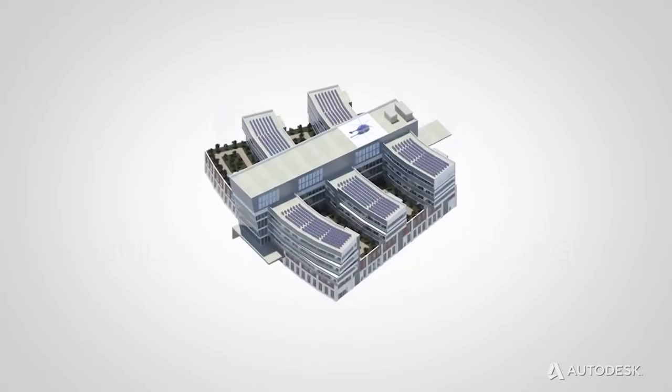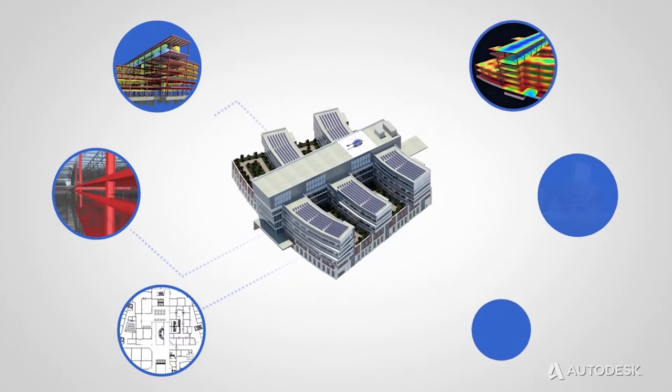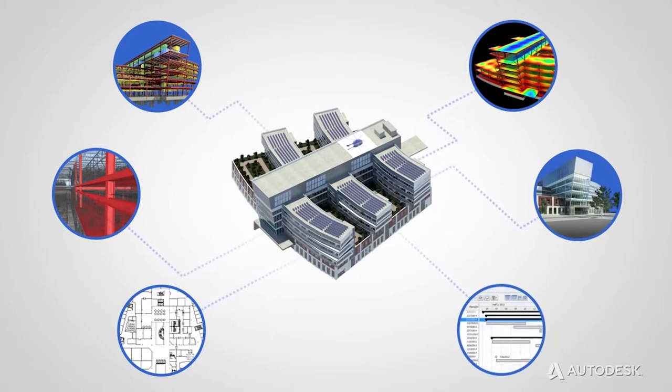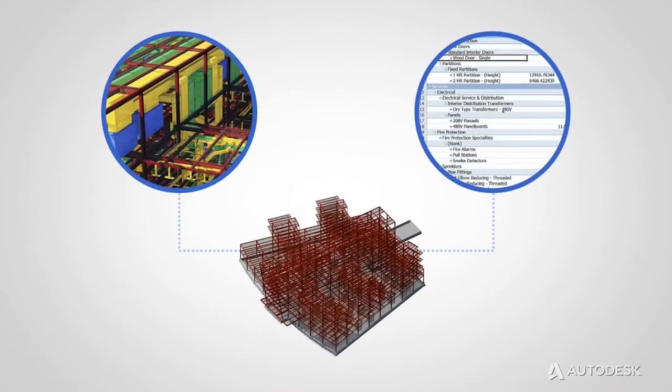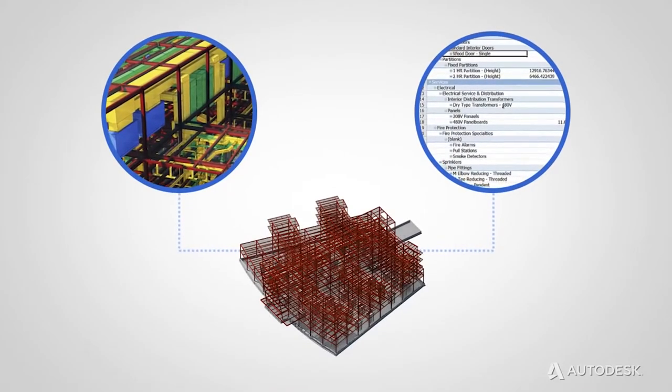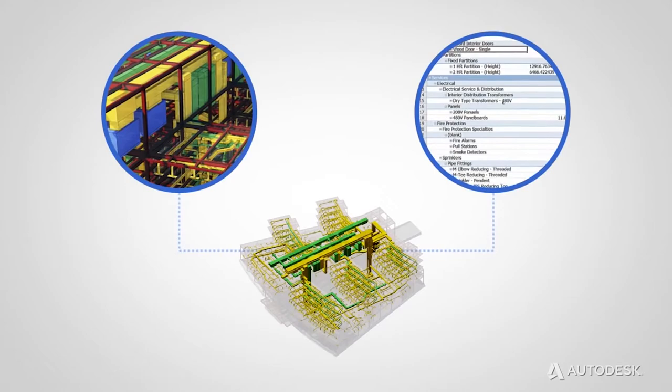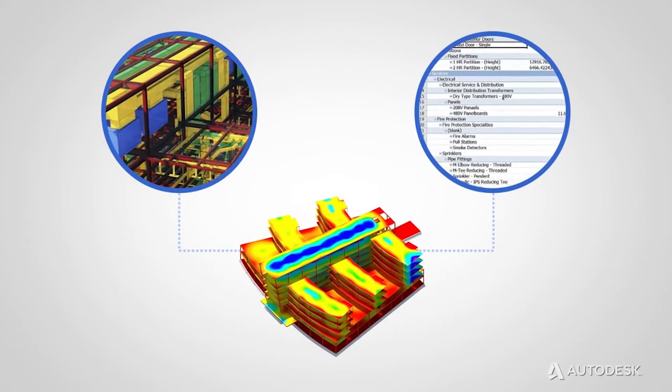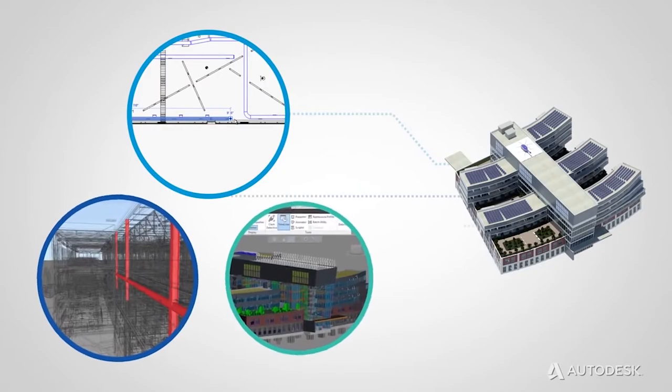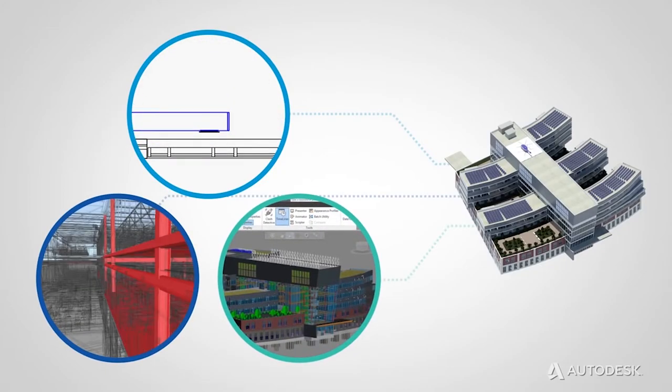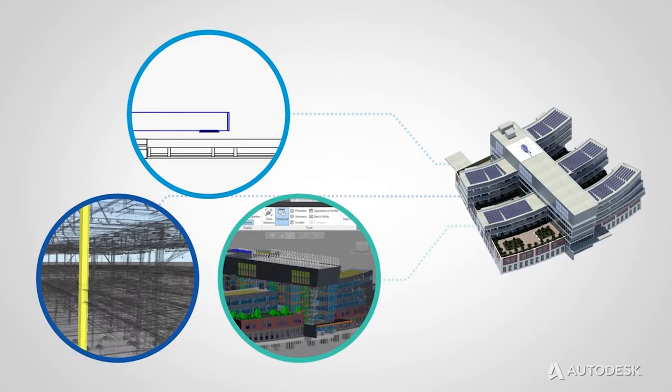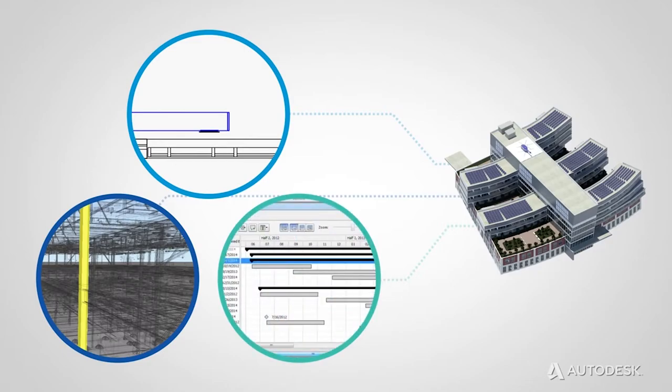What is BIM? BIM is an intelligent model based process for planning, designing, building and managing buildings and infrastructure. BIM creates more than just digital 2D or 3D models. BIM models use objects that have intelligence, geometry and data. If a model element is changed, BIM software coordinates the change in all views that display that element. Because they are all views of the same underlying information.